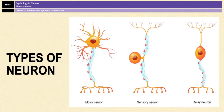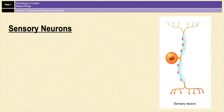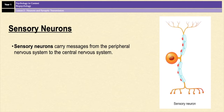There are three different types of neurons that you need to know for A-level psychology: sensory neurons, relay neurons, and motor neurons. Sensory neurons carry information from the peripheral nervous system to the central nervous system. They're found in receptors such as the eyes, the ears, the tongue, and the skin, and they carry impulses to the spinal cord and the brain.